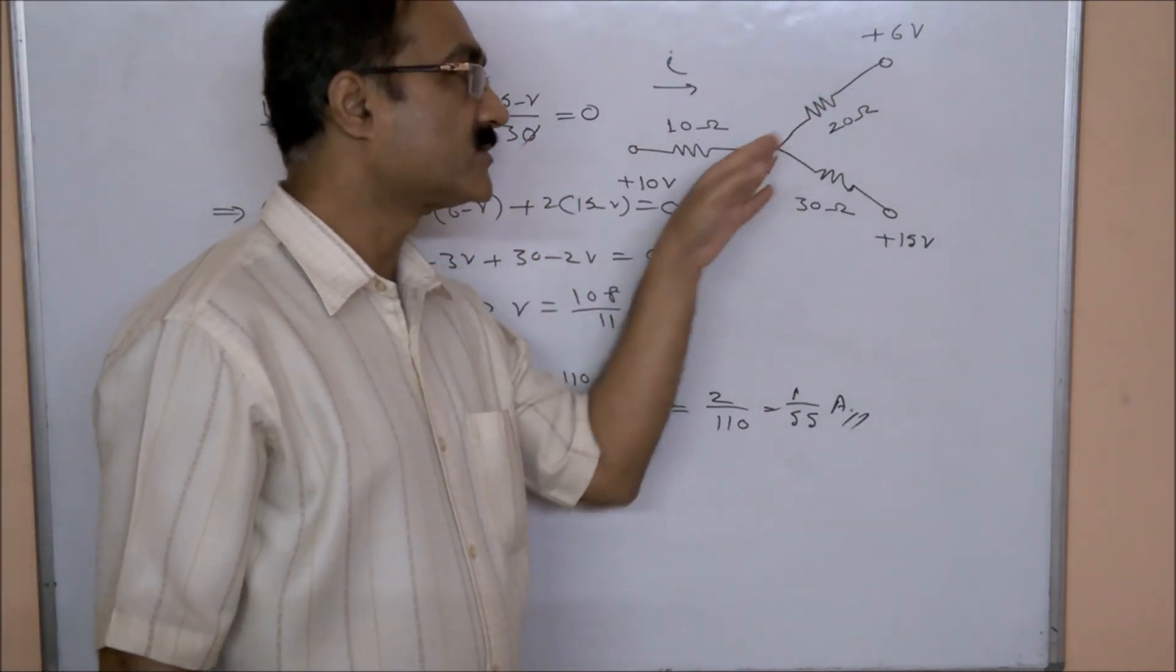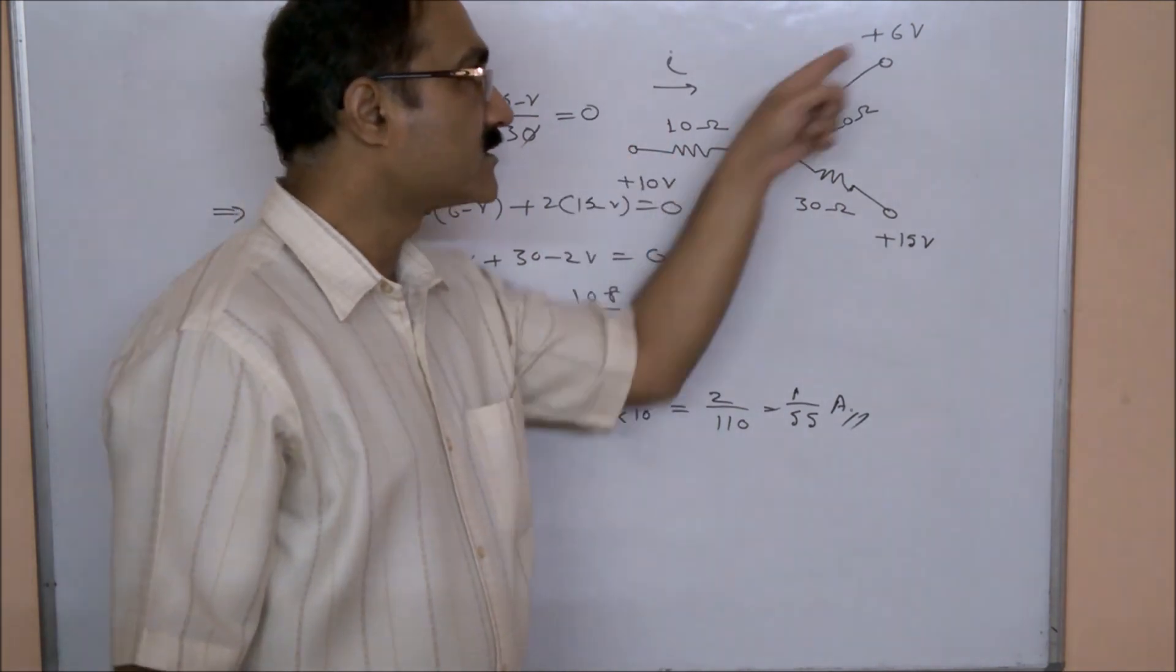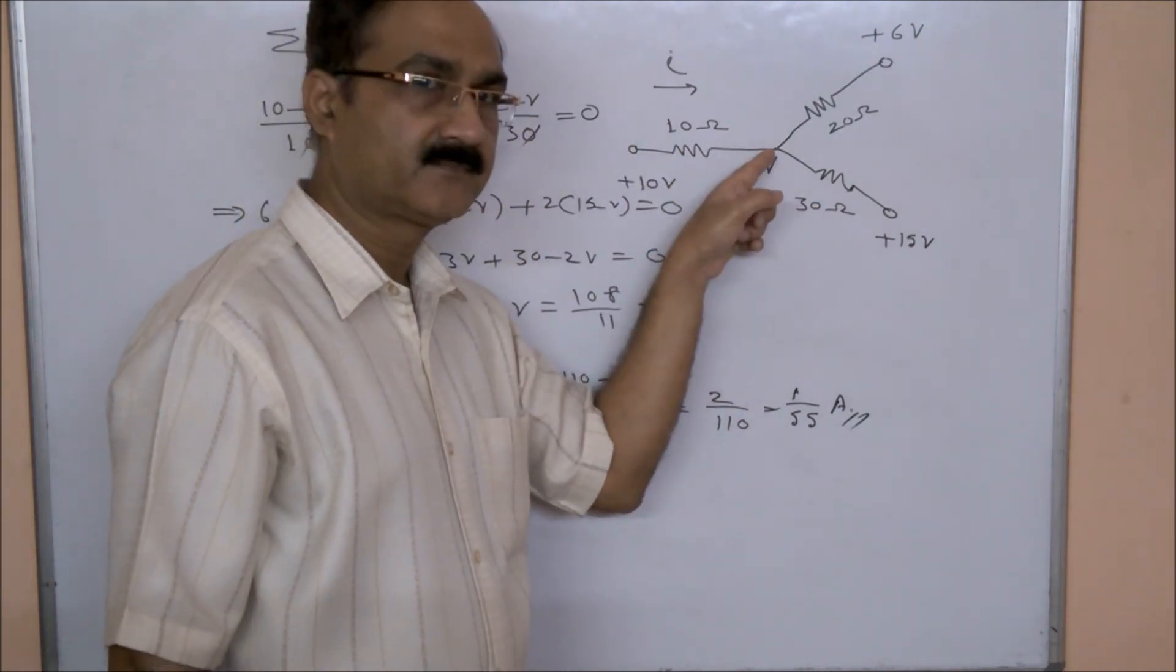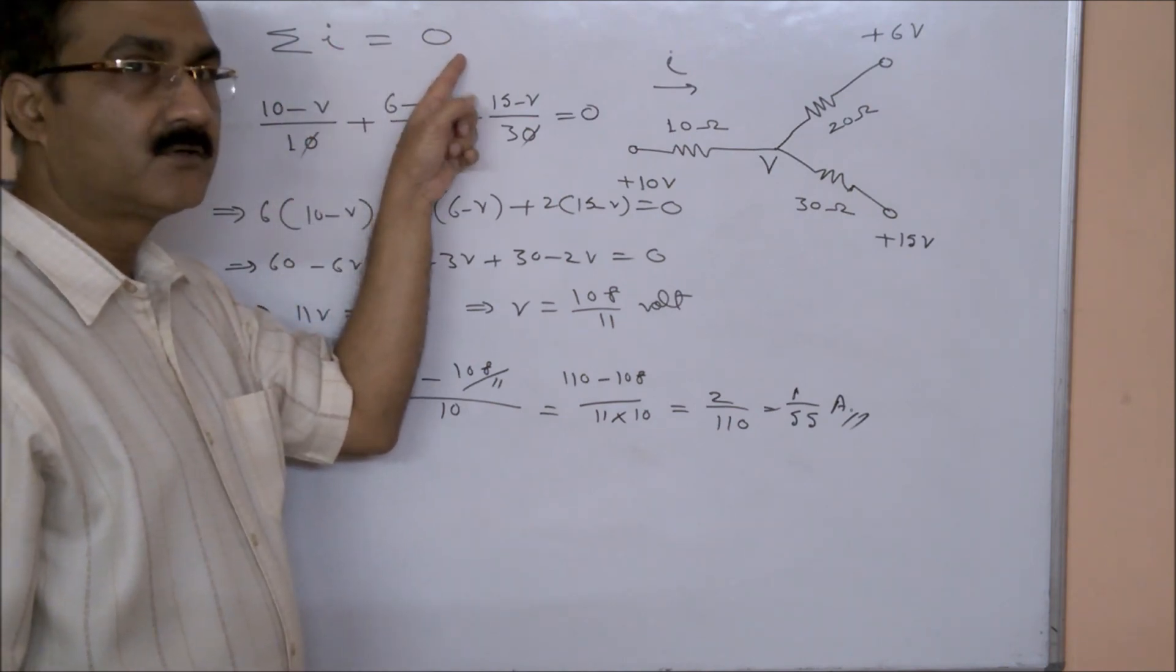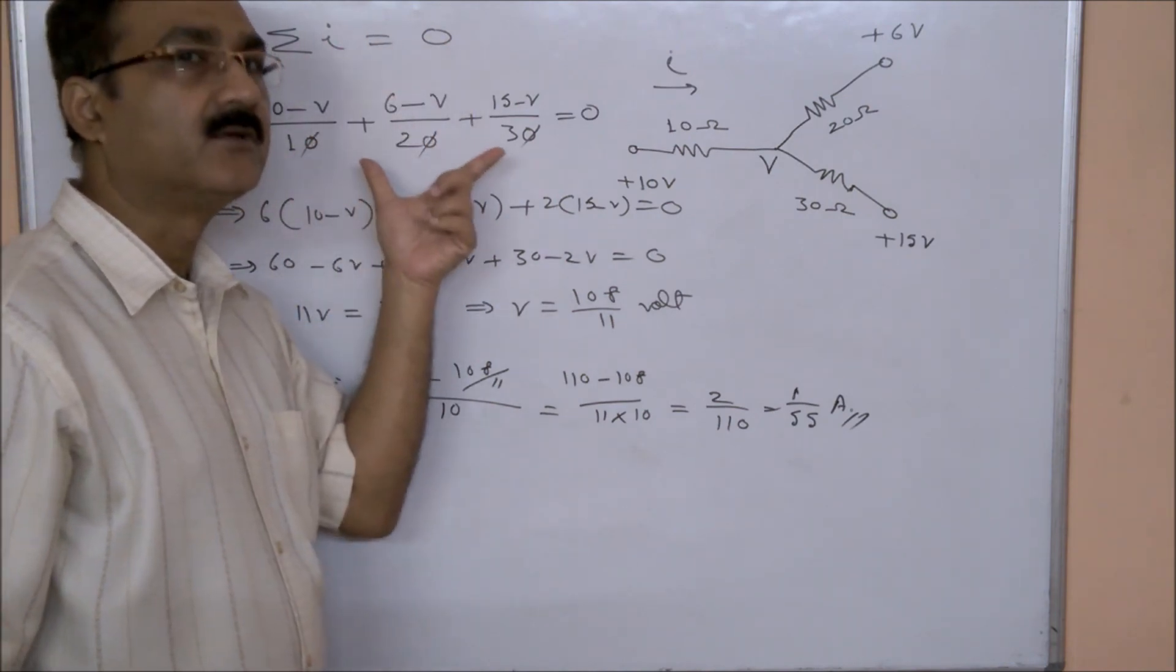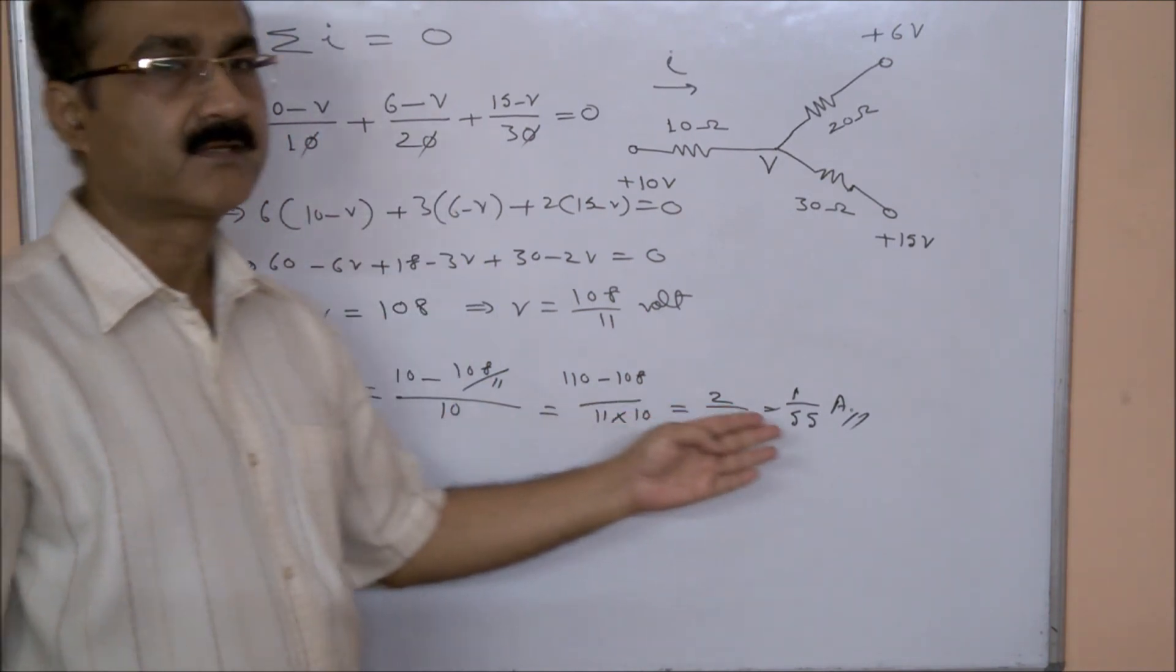Now at this point, don't worry about whether the current is flowing this way or that way on this branch. So assume that all the currents are coming into the junction, then summation of all incoming currents equal to zero. We use that form of the equation, then we do the calculations to get the answer.